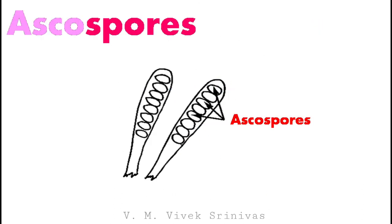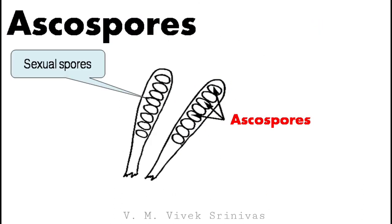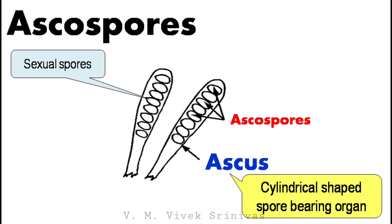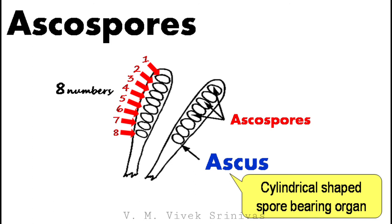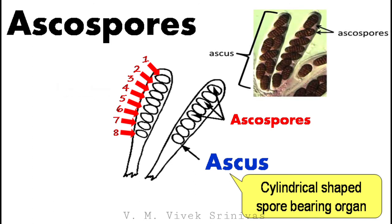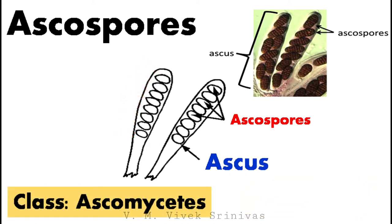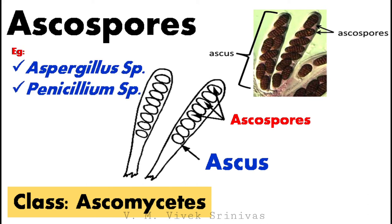Next, ascospores. This is also a sexual spore where the spores are formed inside the ascus. Ascus is a cylindrical-shaped spore-bearing organ. Generally, these spores are present in eight numbers in one ascus. This microscopy image shows the ascus carrying the ascospores inside. Ascomycetes is the class of fungi which produces this type of sexual spore. Aspergillus and Penicillium are examples of fungi which produce ascospores.